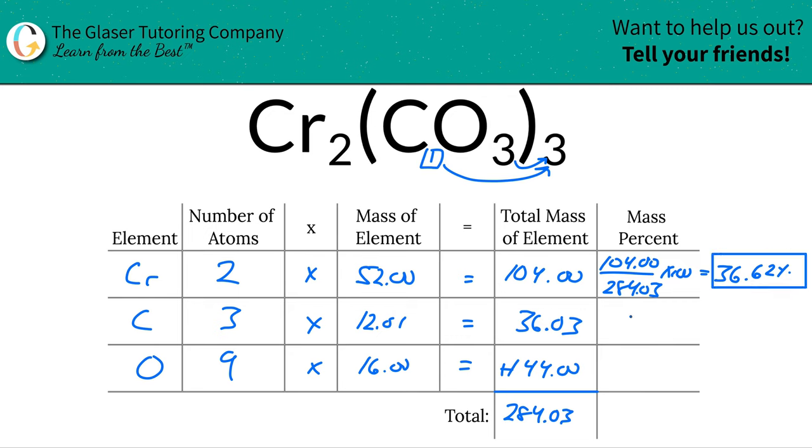And then same thing for carbon. How simple this is. It's just 36, the total mass of the carbon, over the total mass of the compound, 284.03. This is a simple percent calculation. It's simply part over whole multiplied by 100. And that's 12.69 percent.